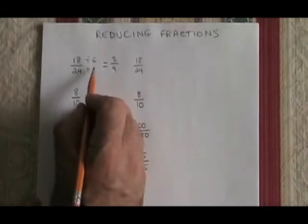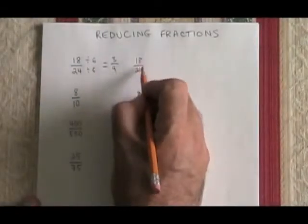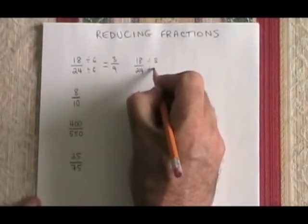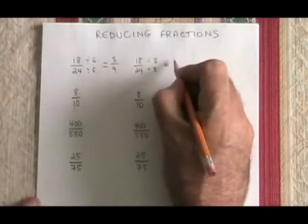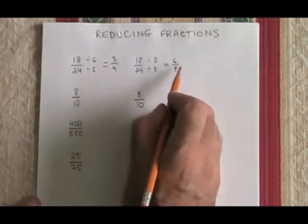What if we don't realize 6 is the greatest common factor, but we still come up with a common factor? What if we think, oh, 3. 3 is a factor of both 18 and 24. Well, we will divide both top and bottom by 3, and we will get 6 over 8. But we will have a fraction that is not completely reduced.